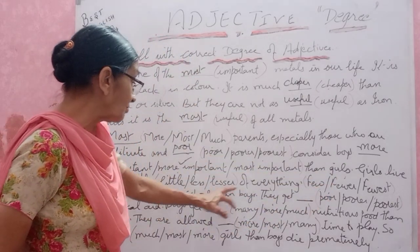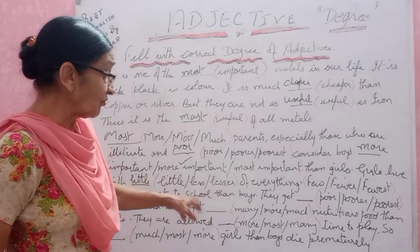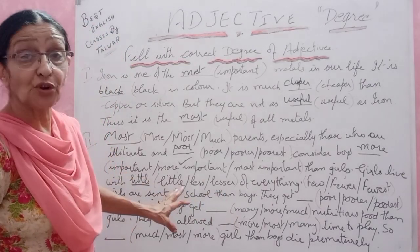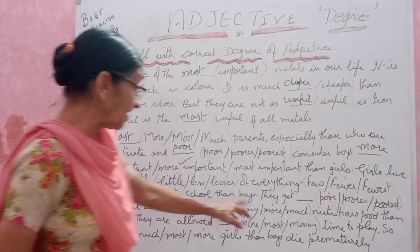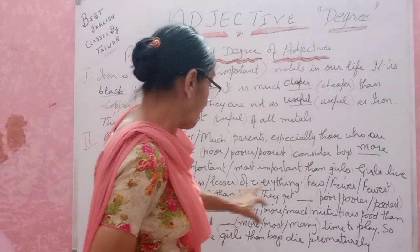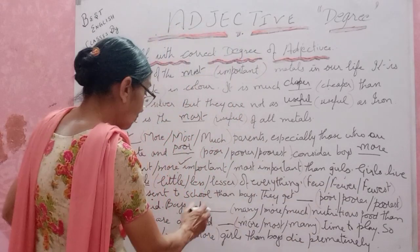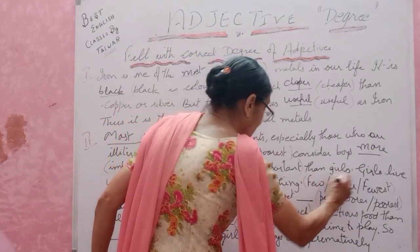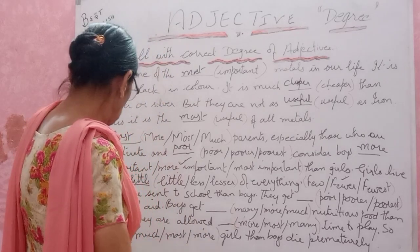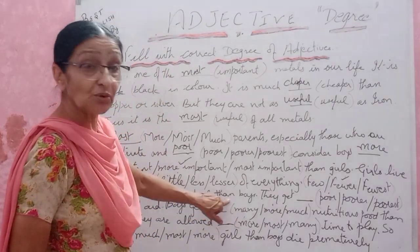Fewer girls are sent to school than boys. Since 'than' is there in the sentence, we use the comparative degree 'fewer'. Girls are fewer in number going to school compared to boys — that is why we put 'fewer' in the blank.